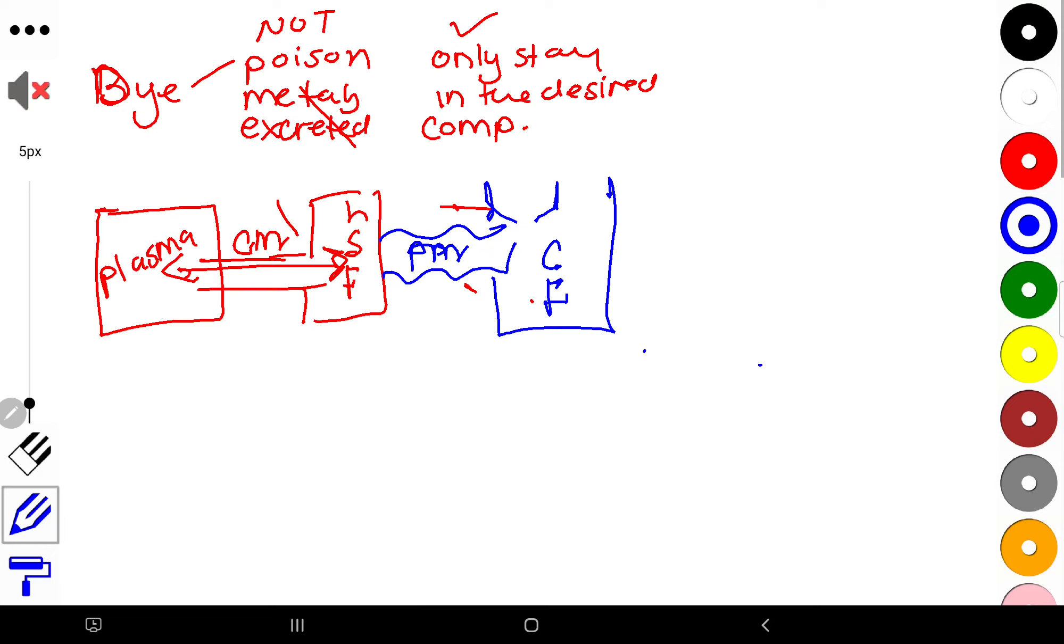So the idea is you have to get a dye that will stay only in the plasma if you want to measure the plasma compartment. If you want to measure the extracellular, it has to go into the plasma as well as the interstitium. That way, you're going to get the extracellular fluid.